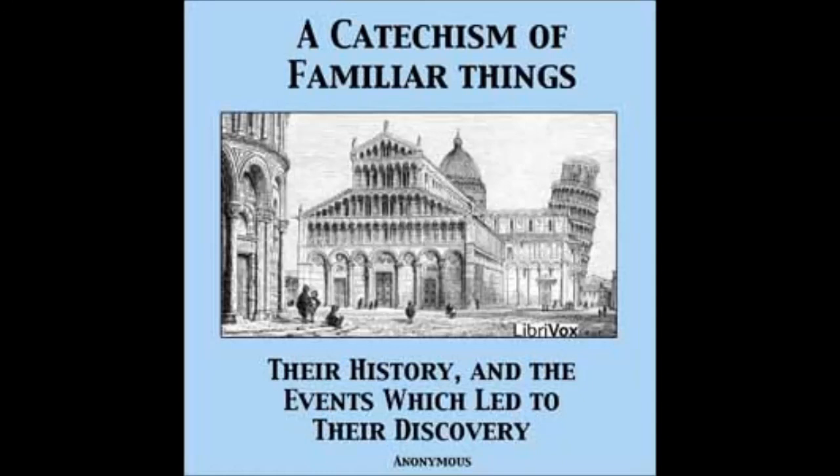Where was Carthage? Carthage, now Tunis, was a commercial city situated on the northern coast of Africa, which long contended for the dominion of the Mediterranean with the Romans, but after three wars, it was taken and destroyed by the Roman general Scipio Africanus, in the year 251 B.C.